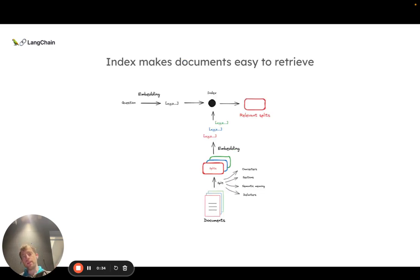And so we saw that the indexing process basically makes documents easy to retrieve, and it goes through a flow that basically looks like you take our documents, you split them in some way into these smaller chunks that can be easily embedded.